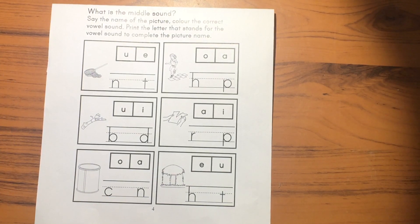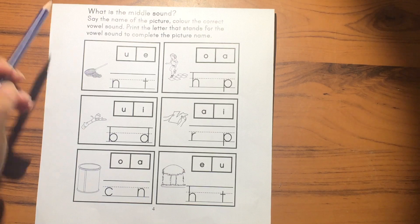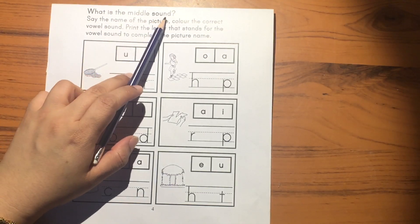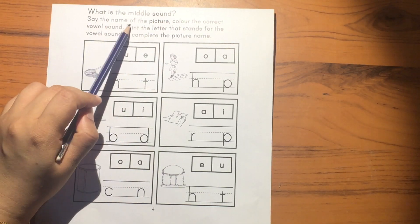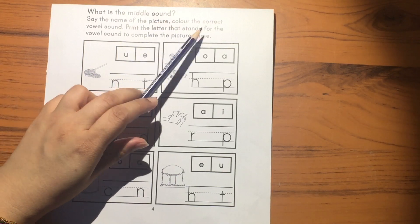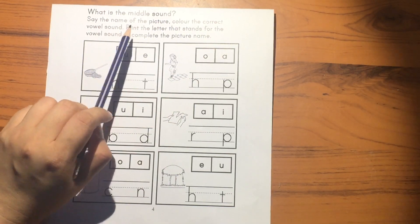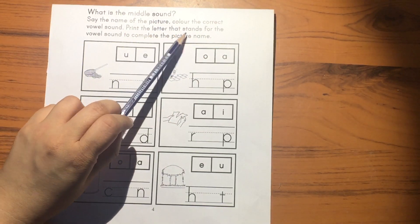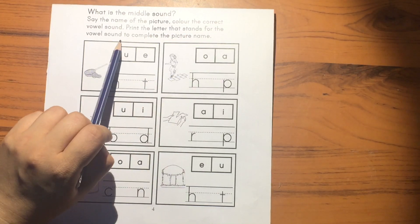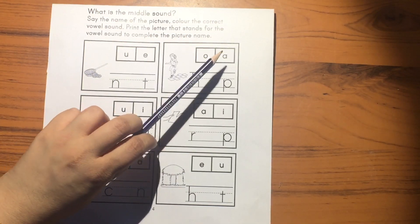Hello, today we are going to do this worksheet for English. What is the middle sound? Say the name of the picture, color the correct vowel sound, then print the letter that stands for the vowel sound to complete the picture name.